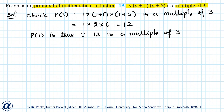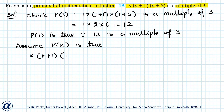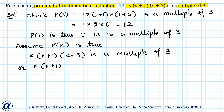The next step is the inductive step, where we assume that P(k) is true and using that we have to show P(k+1) is true. We get the statement for P(k) by substituting n=k in the given expression. So I get k(k+1)(k+5) is a multiple of 3, or I can write this as k(k+1)(k+5) = 3m, where m is a positive integer. This is equation 1.